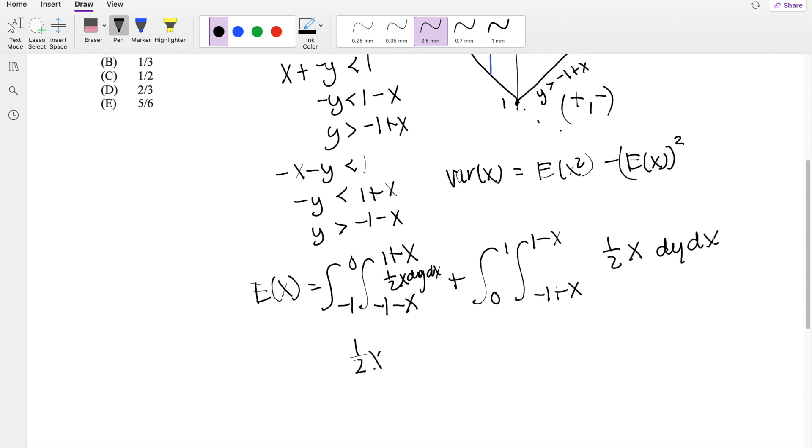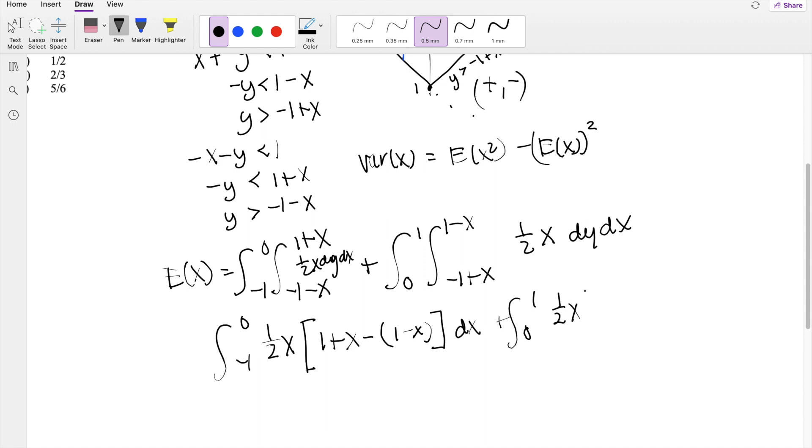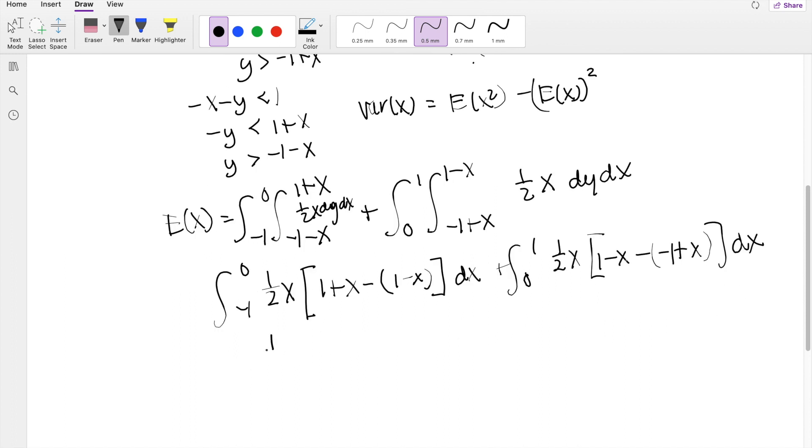So if I'm solving in terms of dy first, the 1 half x is just a constant, so you get 1 plus x minus 1 minus x, x, there's still another integral here, dx, plus 0 to 1. This is going to be the same here, 1 half x, 1 minus x minus 1 plus x, dx. So then on this side, you get 1 plus 1, 2, x plus x. So that's plus 2x, or x plus x.